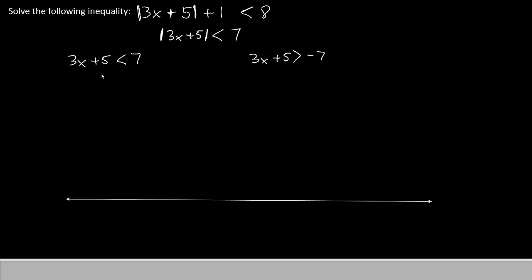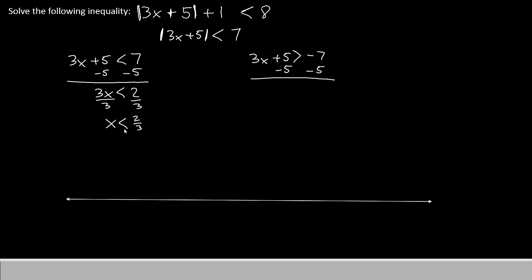We'll subtract 5 from both sides for both equations. For the first equation, we'll have 3x less than 7 minus 5, which is 2. Then we'll divide both sides by 3 and get x less than 2 thirds. For the right-hand equation, we'll have 3x greater than negative 7 minus 5, which gives negative 12. We'll divide both sides by 3 so that x is greater than negative 4.